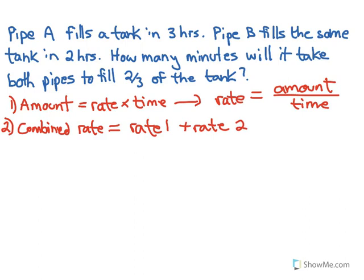So if we use rate equals amount divided by time, rate one we'll even change that to rate A, and rate two we'll call rate B for pipe A and pipe B. So rate A, well it fills one tank, so that's the amount, one, divided by three hours. In other words, it fills a third of a tank per hour, which should make sense.